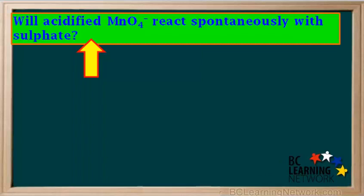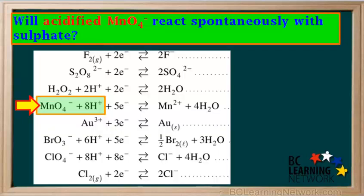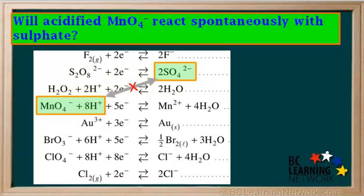Here's an example question: Will acidified MnO4- react spontaneously with sulfate? Acidified permanganate, or MnO4- combined with H+, is the fourth half reaction from the top of the table, with MnO4- and H+ on the left side. The sulfate ion SO4 2- is found on the right side above acidified permanganate. The diagonal between them is a forward slash, so they do not react spontaneously. The answer is no — acidified permanganate will not react spontaneously with sulfate.